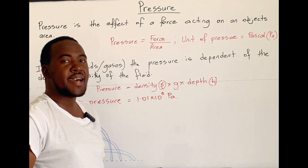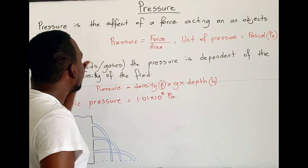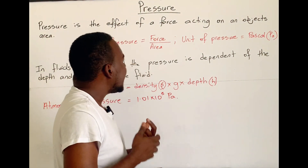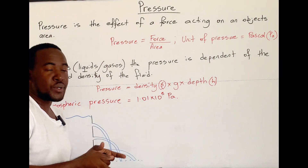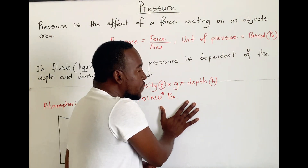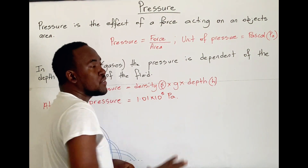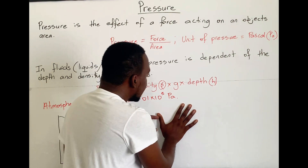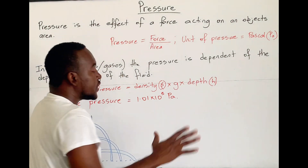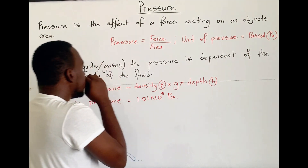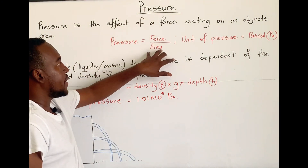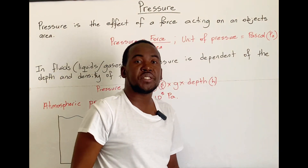The term pressure has to do with the effect of forces acting on a specific area. We get pressure when there is a force that acts on a specific area. For example, if I put my hand on this board, my hand is exerting a force on the wall in the specific area where my hand covers, and hence produces a pressure at that point. Therefore, we find pressure by dividing the force applied by the area.